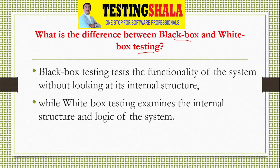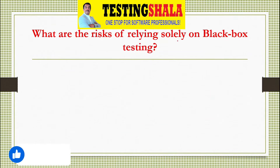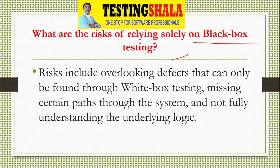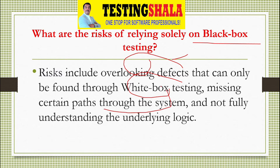The next question is: what are the risks associated with black box testing? The risks include overlooking defects that can only be found through white box testing. There are certain defects we may miss in black box testing because you can only catch them if you have coding knowledge. We may also miss certain paths through the system because without knowing how the code is written, it may not be easy to find all the issues.